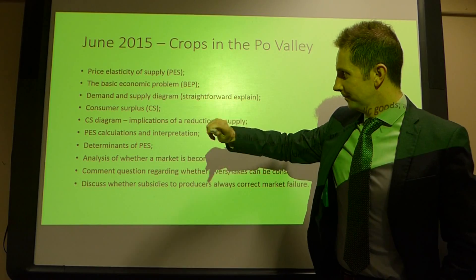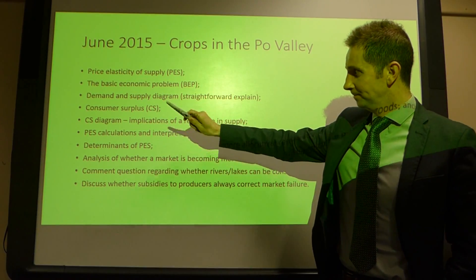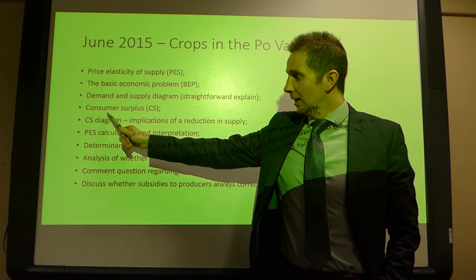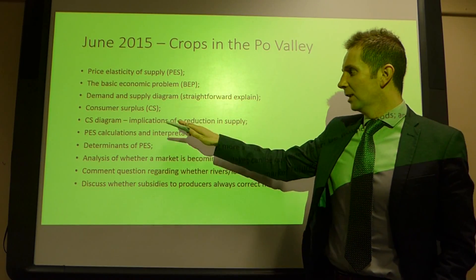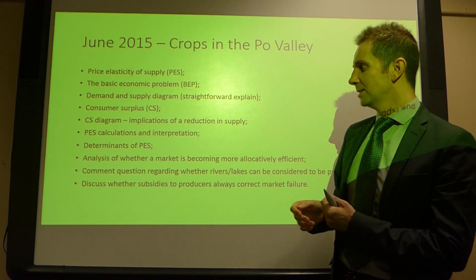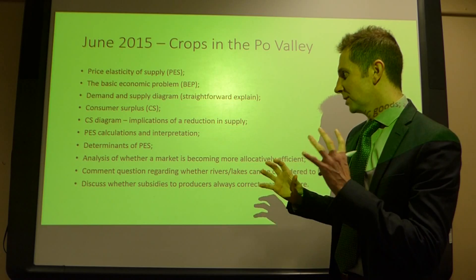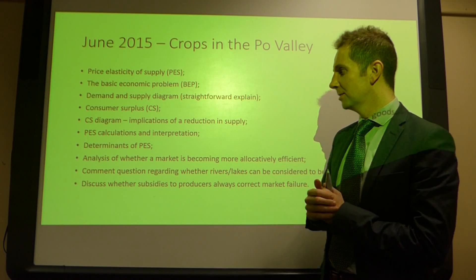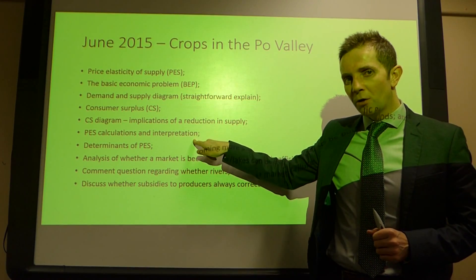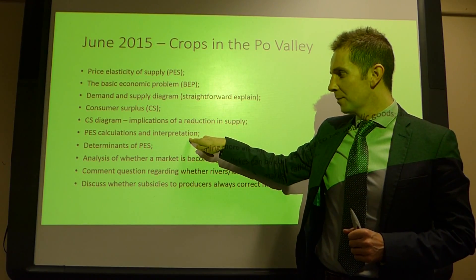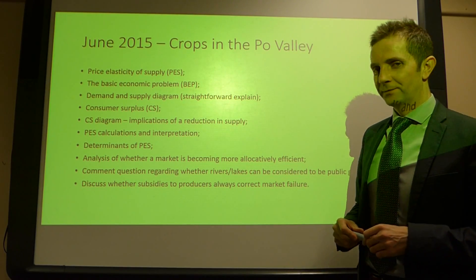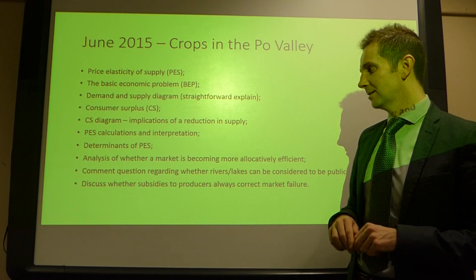Topics on the June 2015 paper included price elasticity of supply, the basic economic problem, a straightforward demand and supply diagram, consumer surplus — including defining it and identifying the change in consumer surplus following a shift in supply — and price elasticity of supply calculations and interpretation. Do remember to bring a calculator to the exam; very important for both micro and macro, AS and A2.